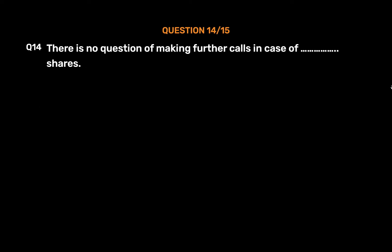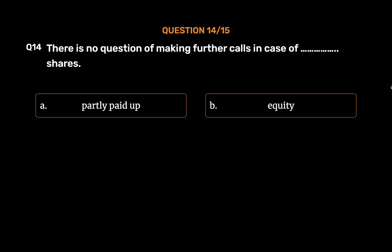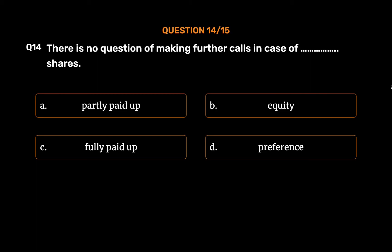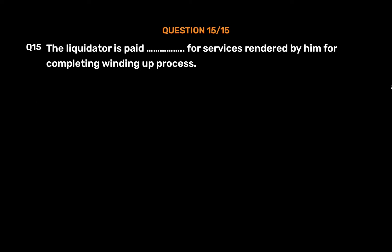Question number 14. There is no question of making further calls in case of which type of Shares? Option A: Partly paid up. Option B: Equity. Option C: Fully paid up. Option D: Preference. The correct answer is Option C — Fully paid up.